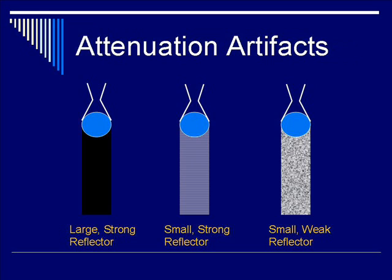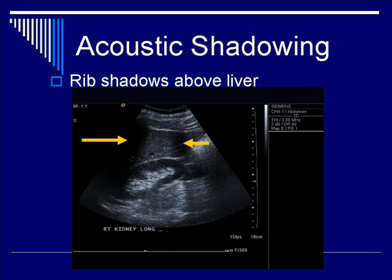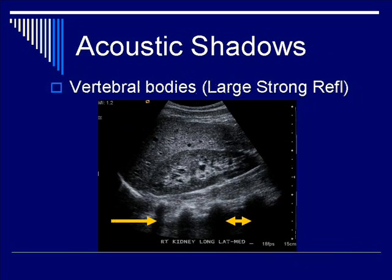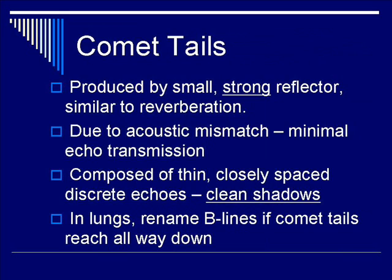In the next clinical example, you will see the first category of large strong reflectors — in this case, rib shadows. In the right upper quadrant scan, the yellow arrows point to two rib shadows. You also have the vertebral bodies casting a strong reflection of the incoming ultrasound beam, producing multiple vertical rib shadows.